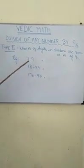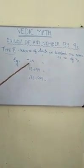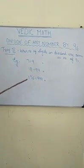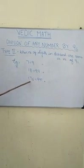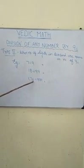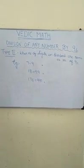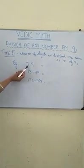For example, here we have one 9 and the digits are also 1 in the dividend. Here we have two 9s and there are 2 digits in the dividend. Here three 9s are there and 3 digits are there in the dividend. How do we write the answer? The answer for this type of sum is very simple. You have to write just that digit as the remainder.